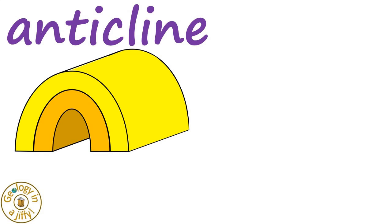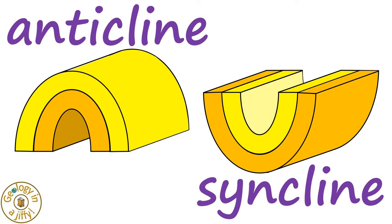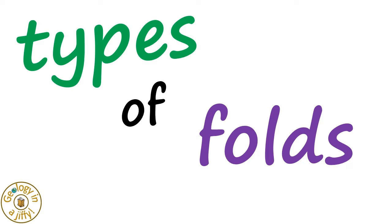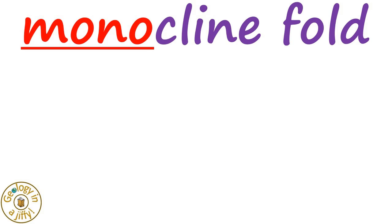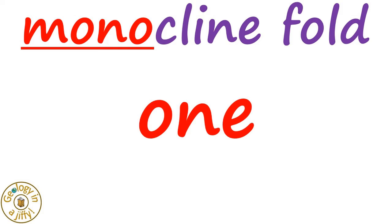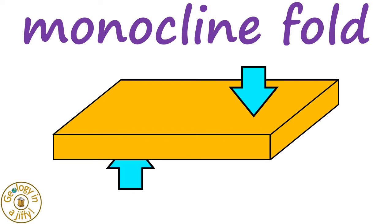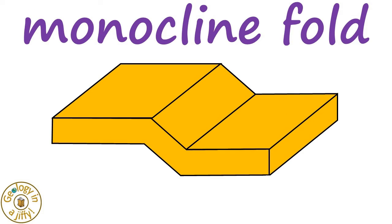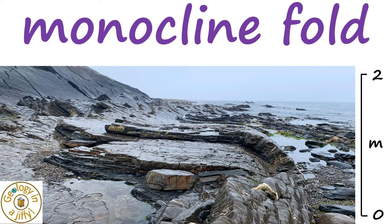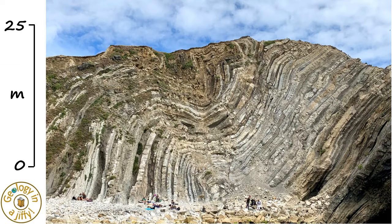We know the two basic forms of folds are anticlines and synclines, but there are other types. One is a monocline fold — the term mono meaning one. A monocline fold forms due to opposing pressures, forming a fold where both limbs are parallel but offset to each other, with limbs being horizontal or near-horizontal, as seen in these folded Carboniferous age strata in Cornwall, England, and in the Jurassic age strata of the famous Stair Hole in southern England.